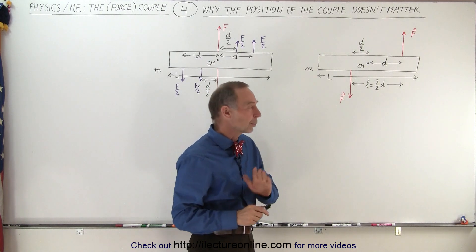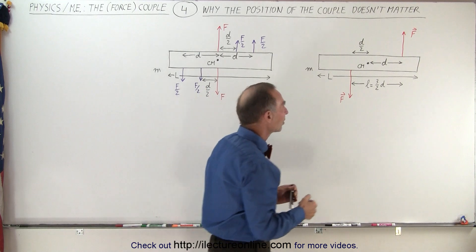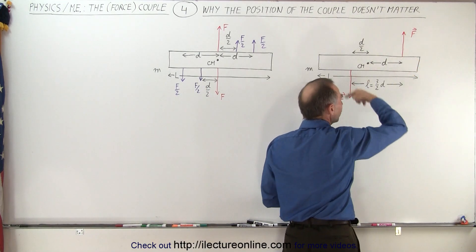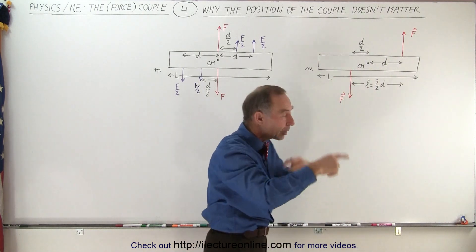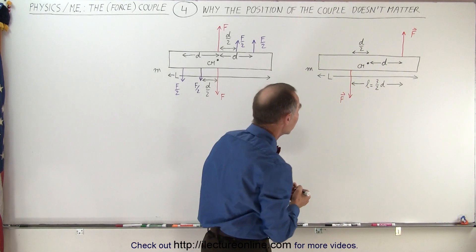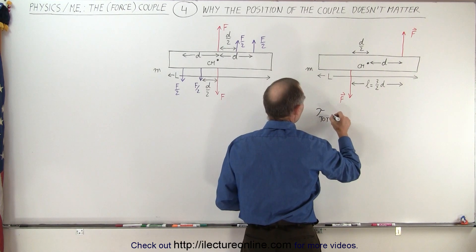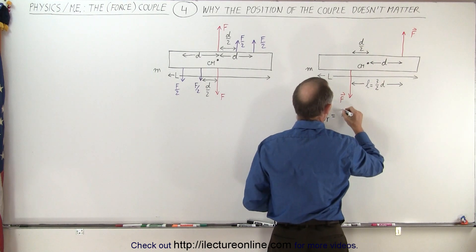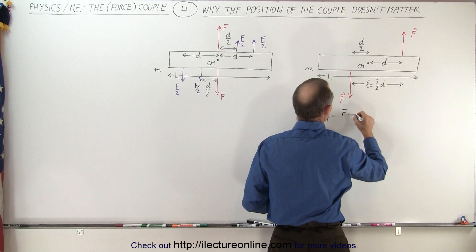First, what we're going to do is calculate the torque by simply summing up the torque of this force and this force together. Notice that in both cases, both forces will cause a counterclockwise rotation, meaning a positive torque. So therefore, we can say that the total torque is going to be equal to the first force times the distance from the line of action of the force to the point of rotation.